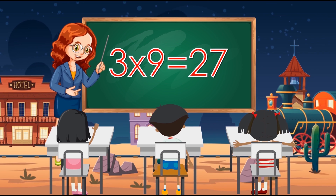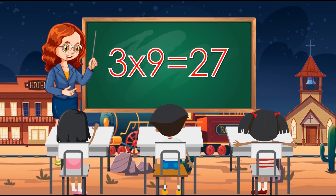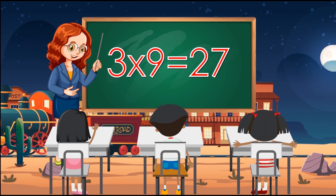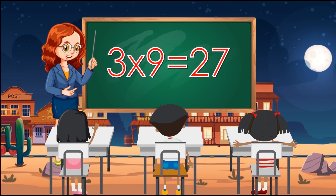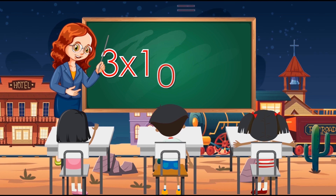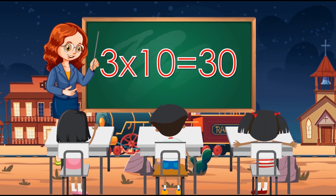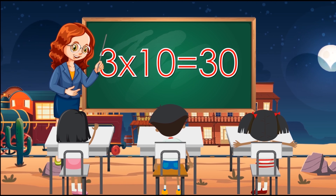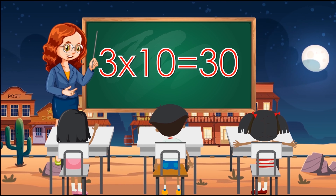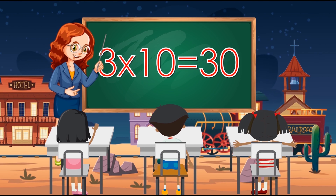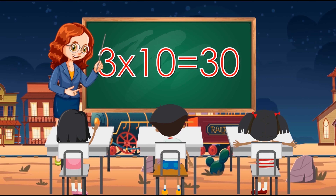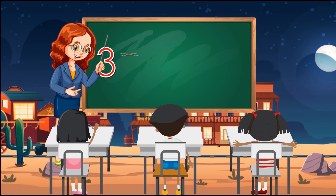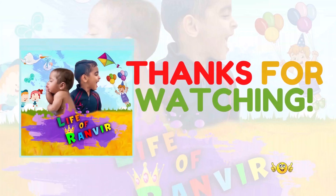3 times 9 equals 27. 3 times 10 equals 30.